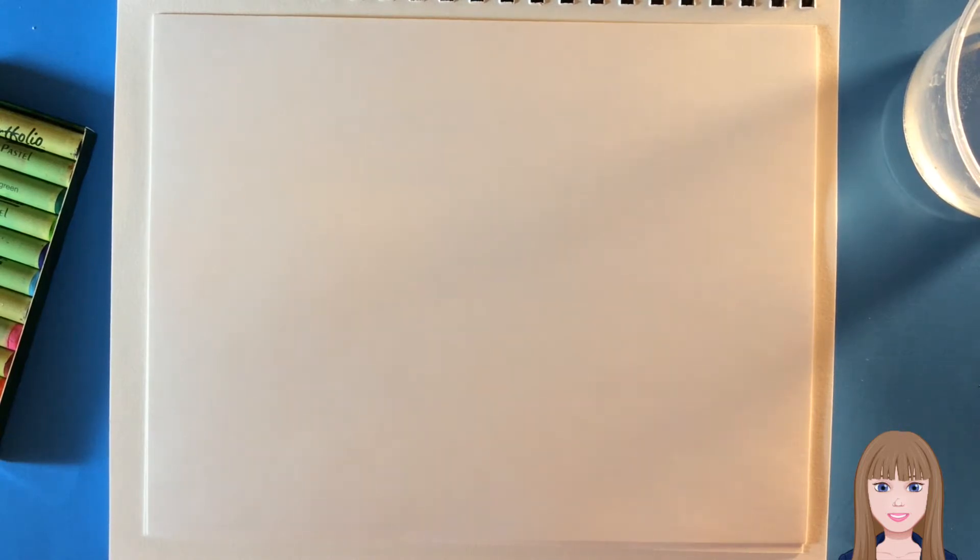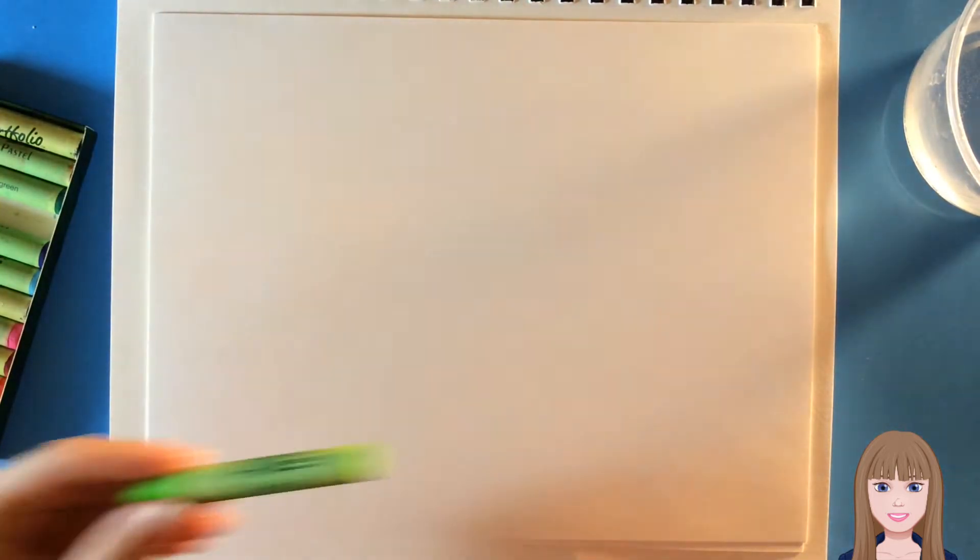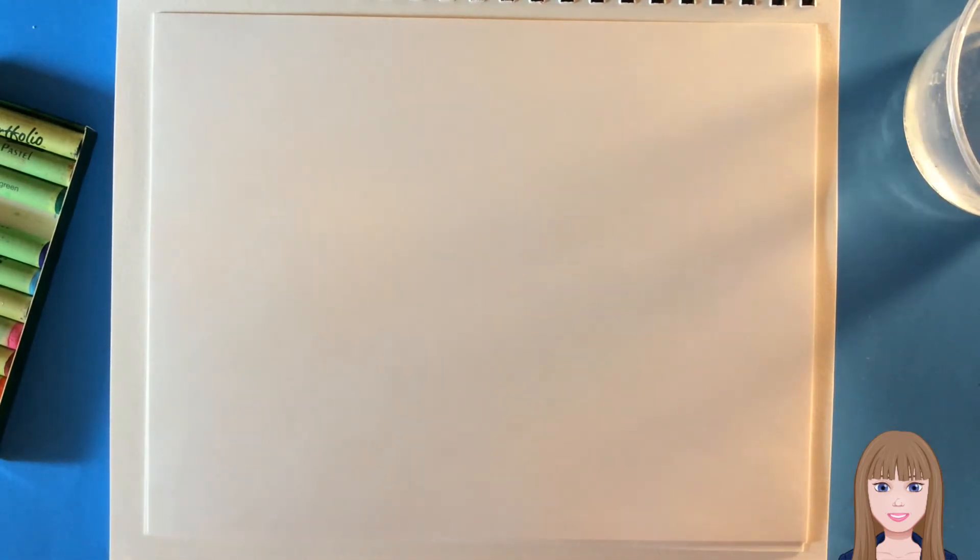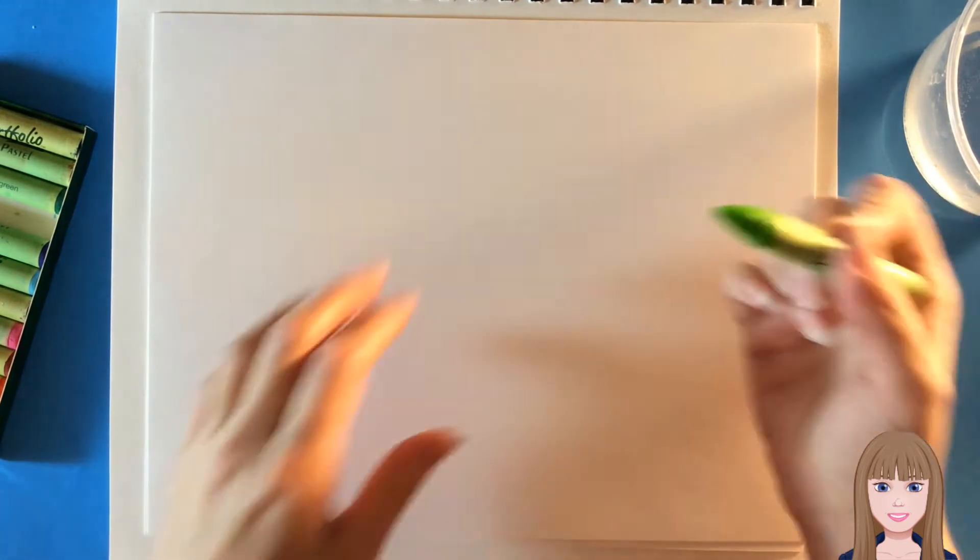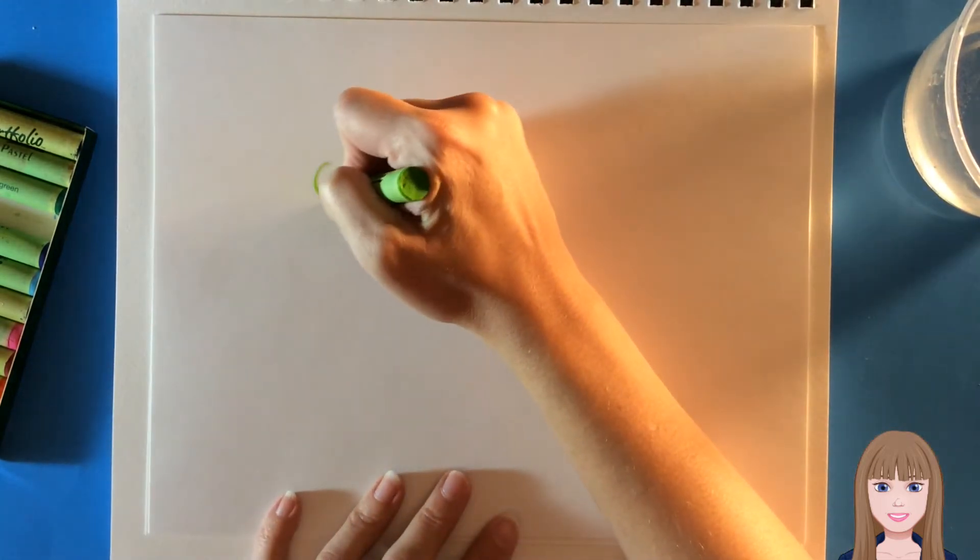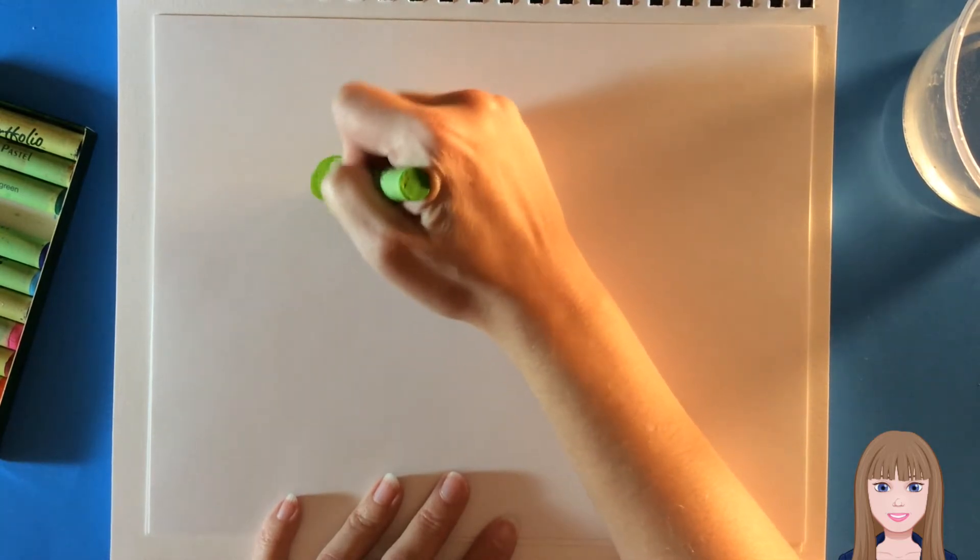So to get started, I am going to select my color for my dancing and moving figure. I'm going to actually use the yellow green, and my first dancing figure is going to have a circle for the head.